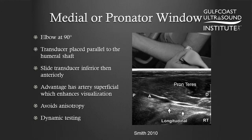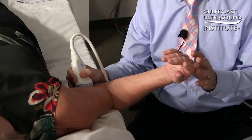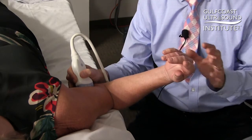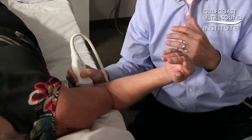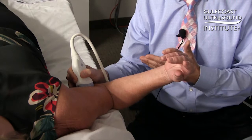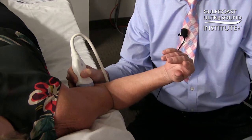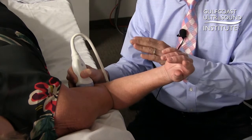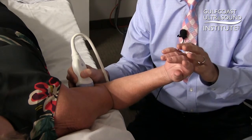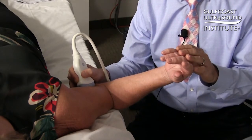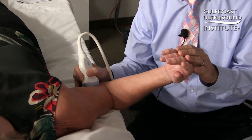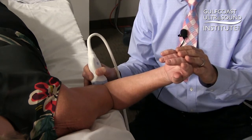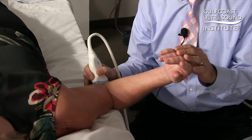One of the key things to start out with is the transducer laying parallel on the medial humerus. I often tell people starting out: don't bother looking at the screen when you're first starting out, just look at the transducer and the arm. What you're going to do is slide the transducer down distally until it reaches the antecubital fossa, or just distal to that.